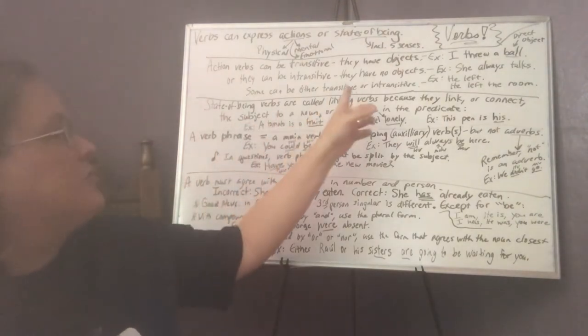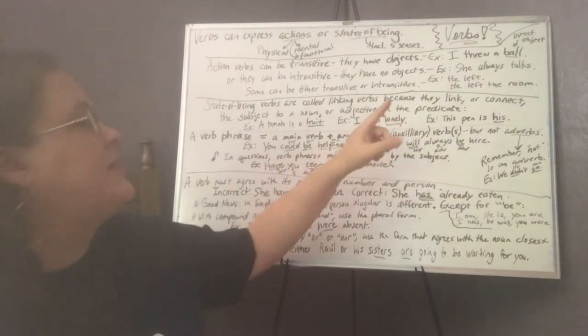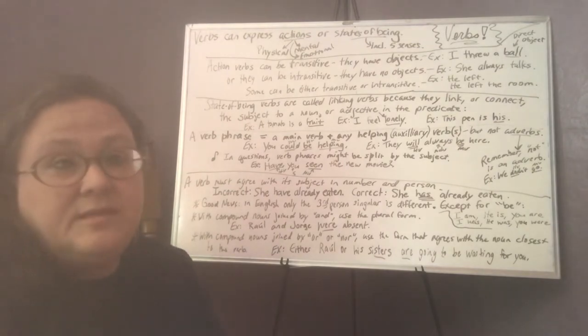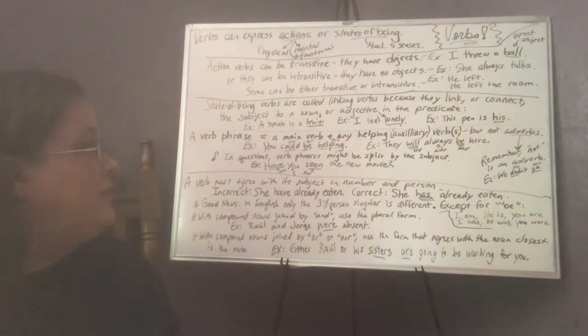State of being verbs are called linking verbs because they link or connect the subject to a noun or adjective in the predicate. For example, a tomato is a fruit. So the word fruit is linked with the word tomato. In this case, it renames it or identifies it as a fruit.